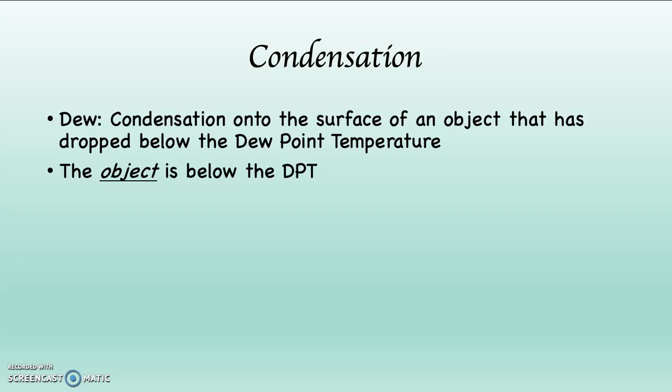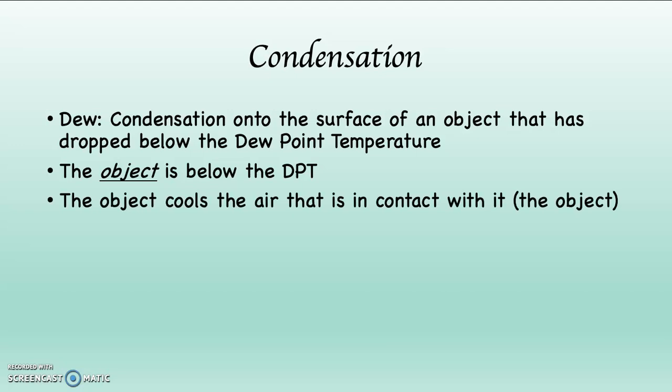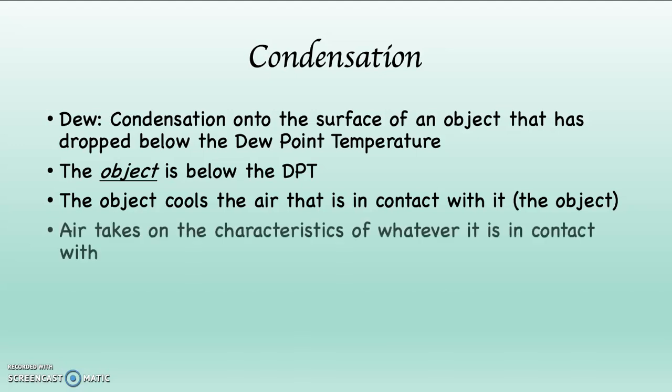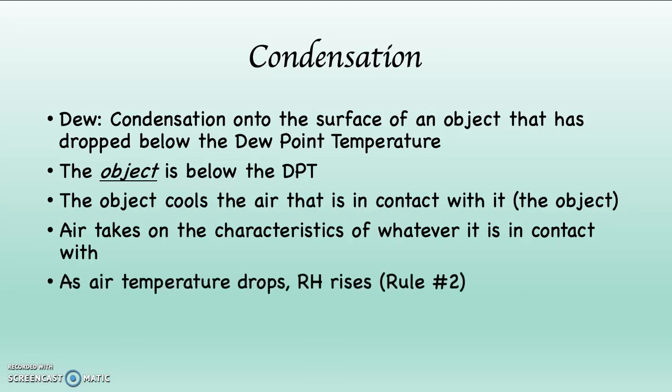The object is below the dew point temperature of the air. The object then cools the air that's in contact with it. Air takes on the characteristics of whatever it's over — if the air's in contact with something hot, it gets hot; if it's in contact with something cold, it gets cold. And as air temperature goes down, relative humidity goes up. This is rule number two.